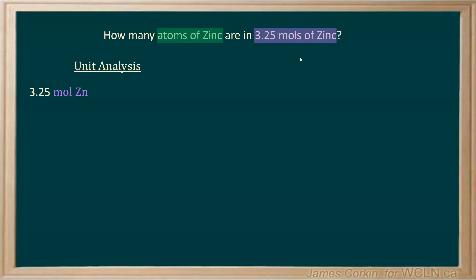Always include your units and your chemical species when you write a number. We've got 3.25 moles of zinc. So, let's start converting that to atoms.